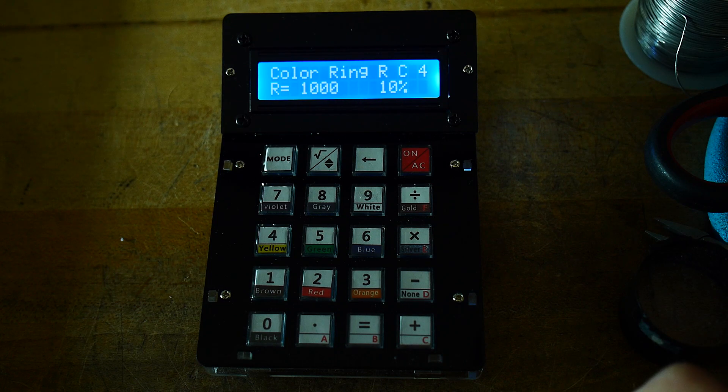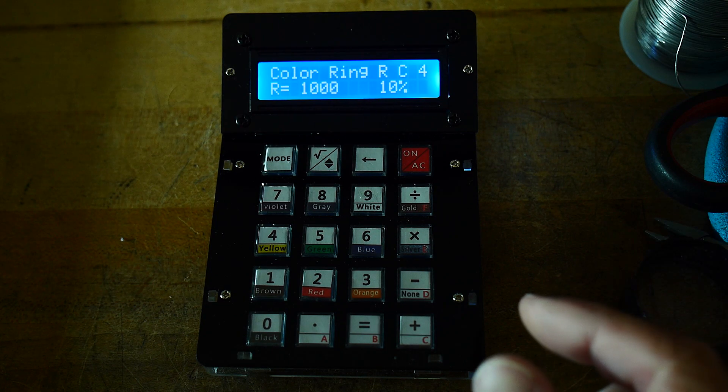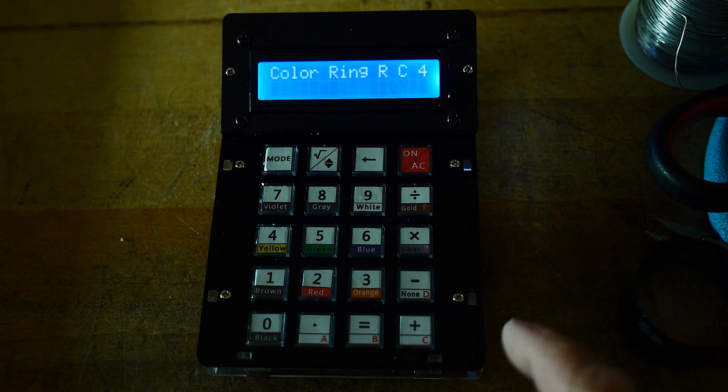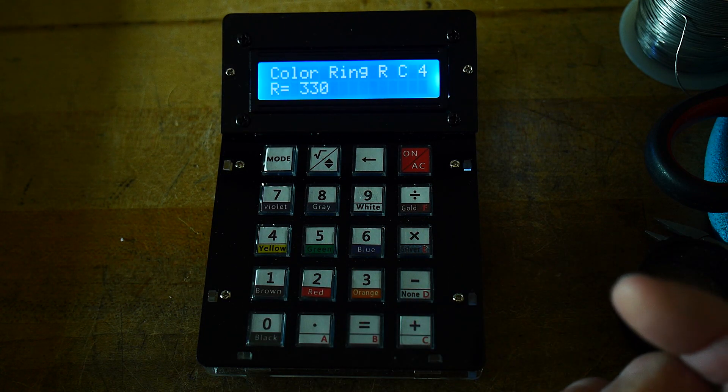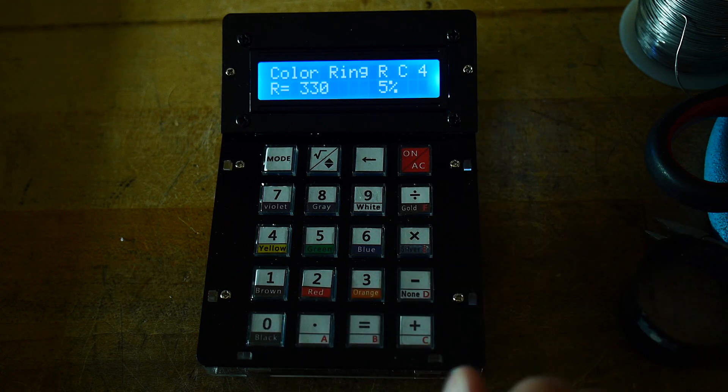Let's say we have a 330 ohm resistor. That would be something like an orange, orange, brown. And let's say it's gold band, 5%.